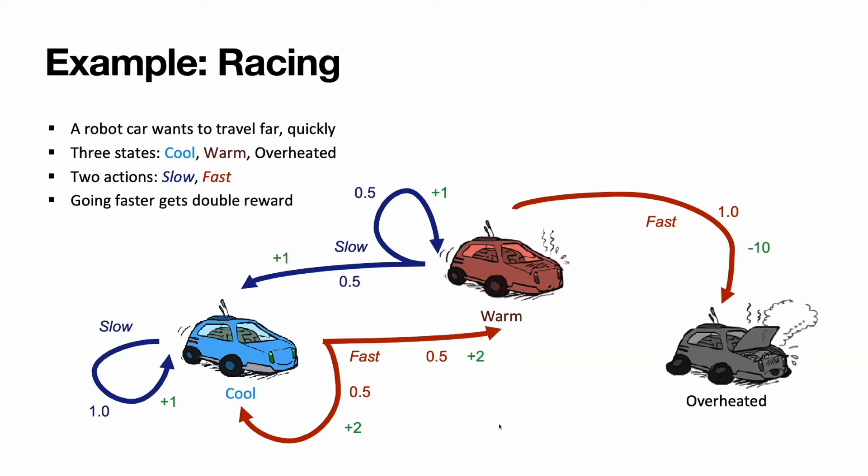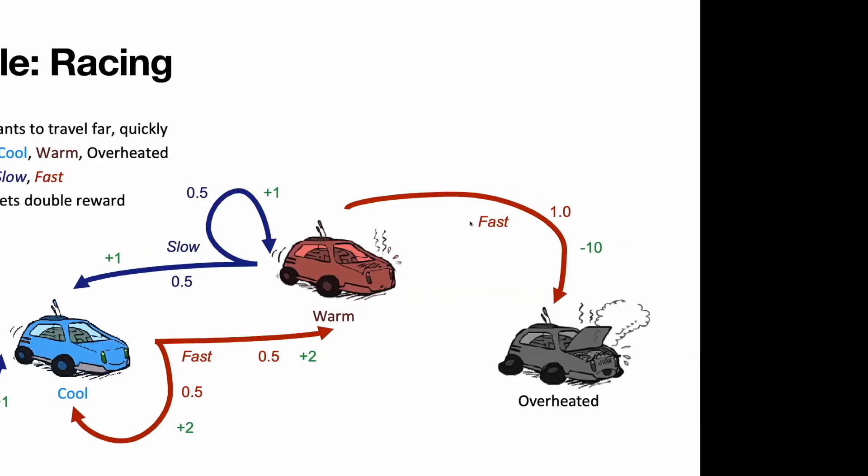If we put a model here with time and doing something, which we will talk about later how it is done and why, we will end up with the model, a policy, which given a state returns you action. What should you do in each state to achieve the goal? To maximize the reward function.